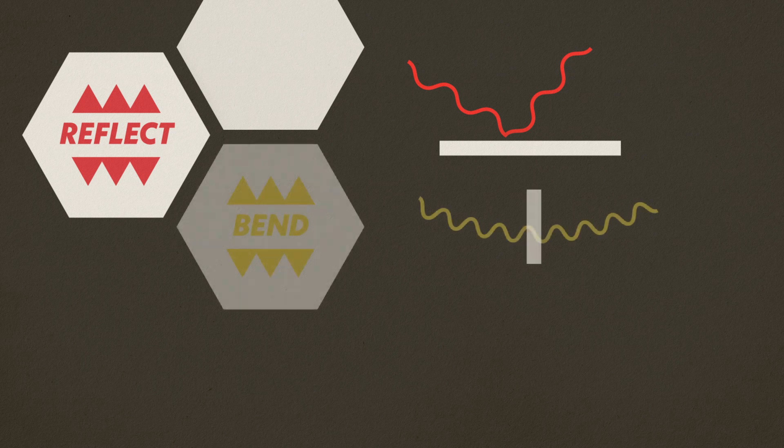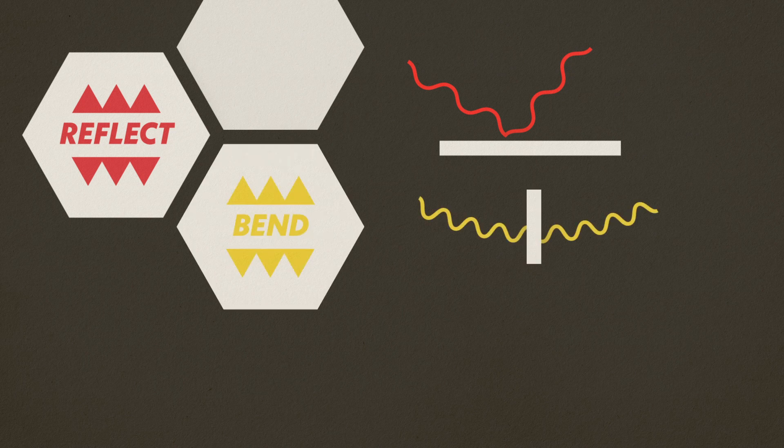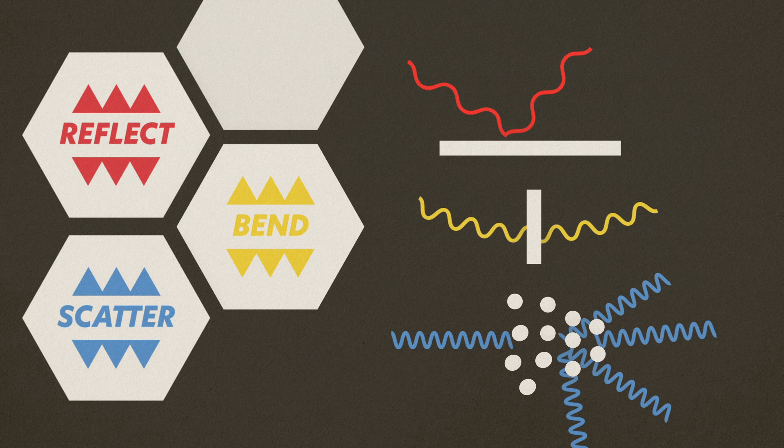All light travels in a straight line, unless something gets in the way. If something gets in the way, it can do one of these three things: it can reflect it like a mirror, or it can bend it like a prism, that crazy crystal thing, or it can scatter it like molecules of gases in the atmosphere.